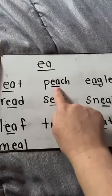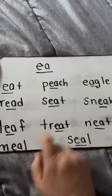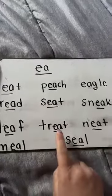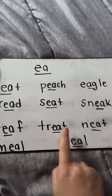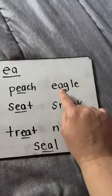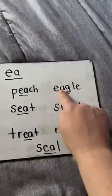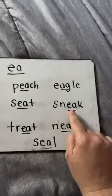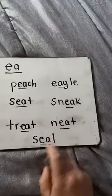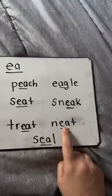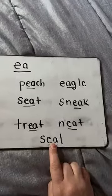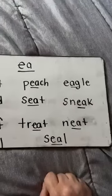Sound: E. Word: teach. Sound: E. Word: seat. Sound: E. Word: treat. Sound: E — oops, it went over that one. Word: eagle. Sound: E. Word: sneak. Sound: E. Word: seal.